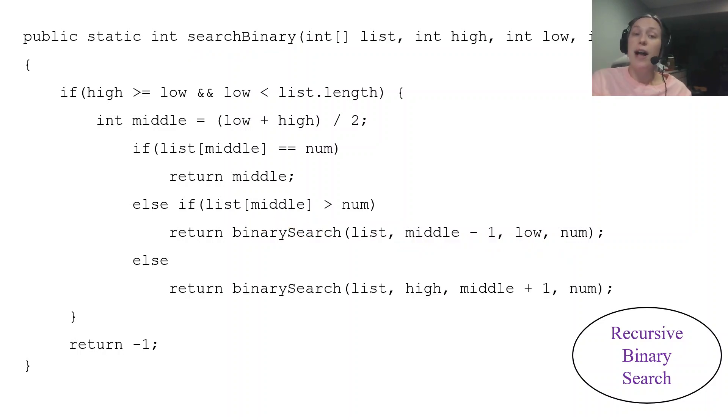Your other else is for the opposite. If the value you are looking for is greater than what you have at your middle index then you want to change your low value. So again this should be searchBinary. Your high stays the same and it's your low index that changes. And that's your recursive binary search.